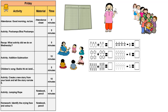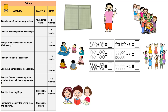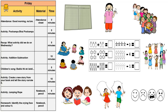Now play the children's song 'Badi Siti Ik Ladki.' After this, together with the children, create a new story by making a book similar to the storybook made before. Now do the jumping rope activity. Finally, assign homework to identify and color a crying face.